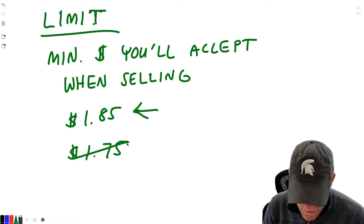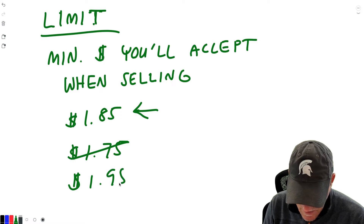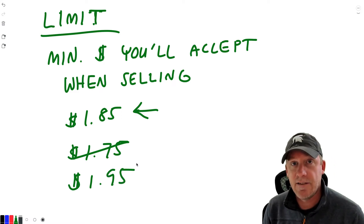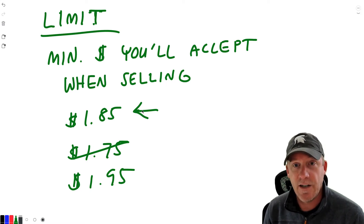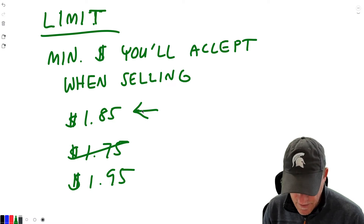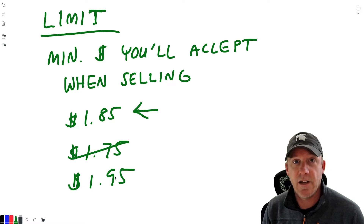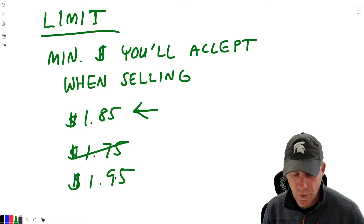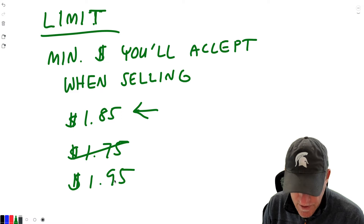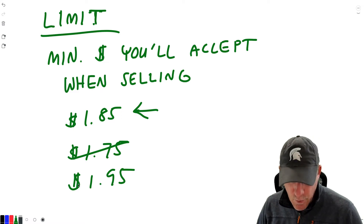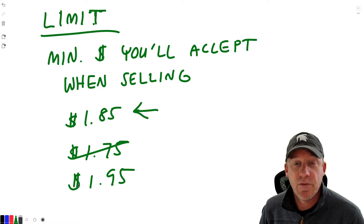Now you could do the other side of this — you could enter a limit order at $1.95 and then it's not going to do anything until the value of these contracts goes up to $1.95. Then the market will say, okay, we've reached your limit price, and we can sell these at your limit price of $1.95 or higher. So we're not really going to use a limit for our stop loss.